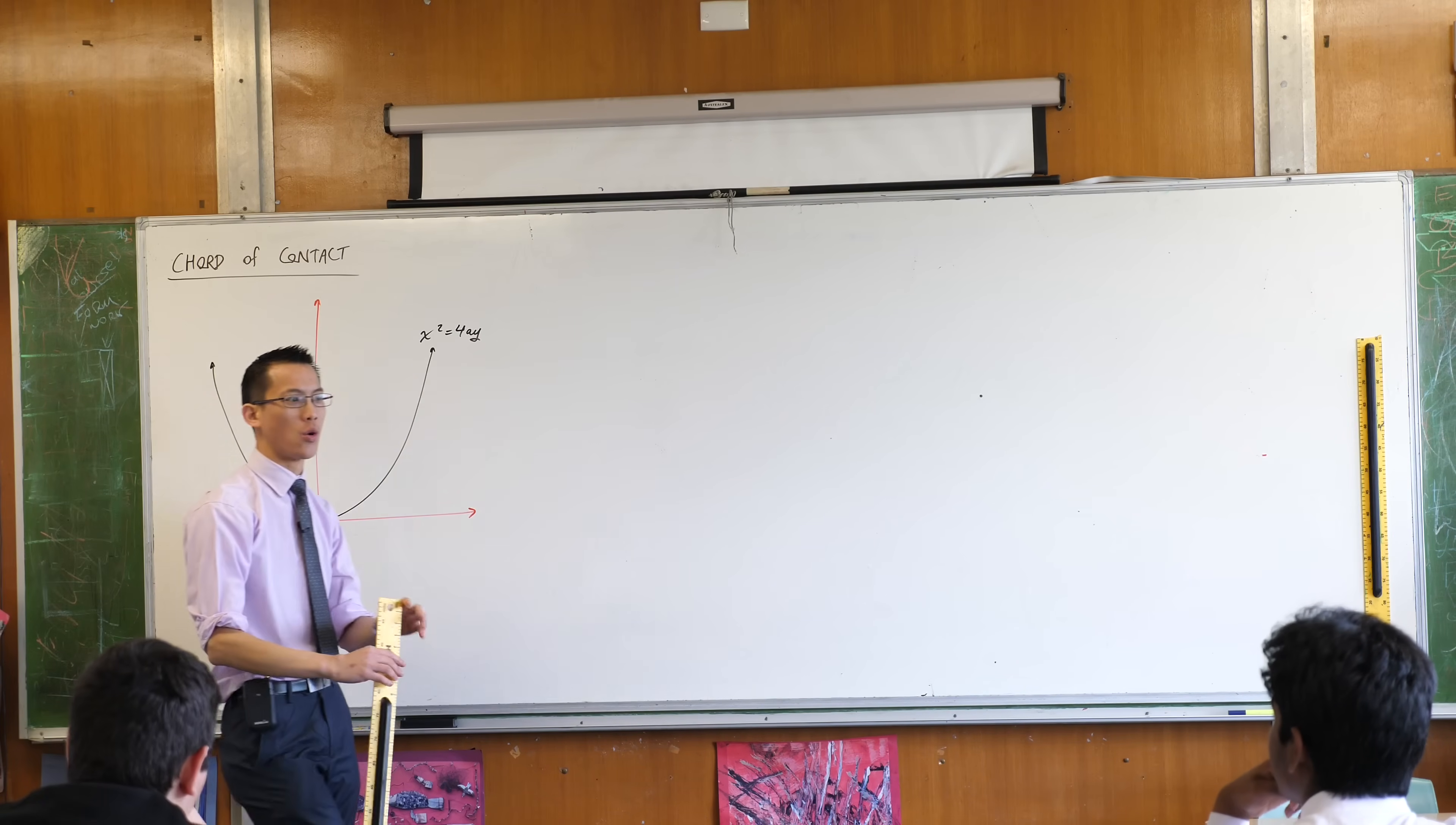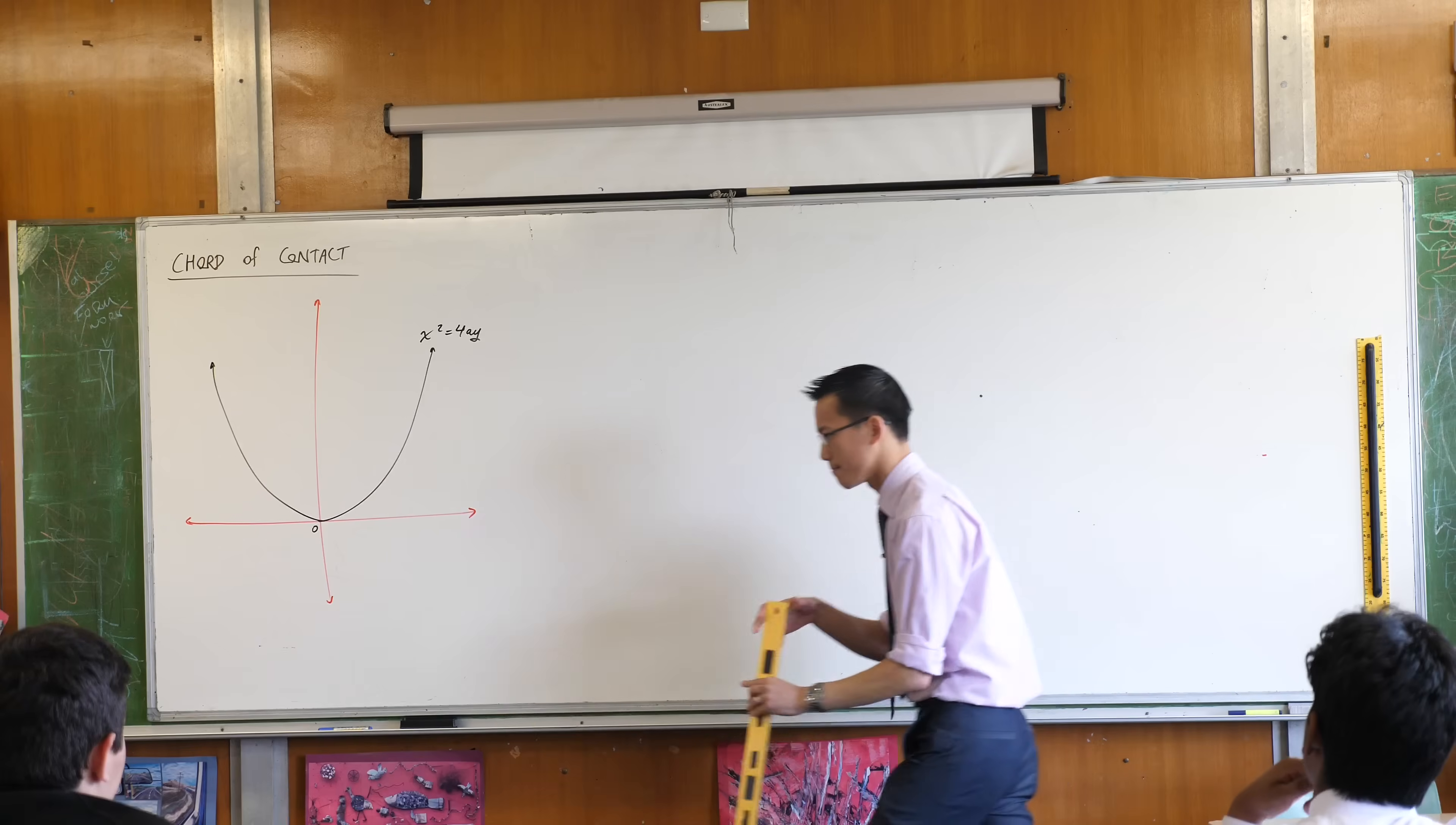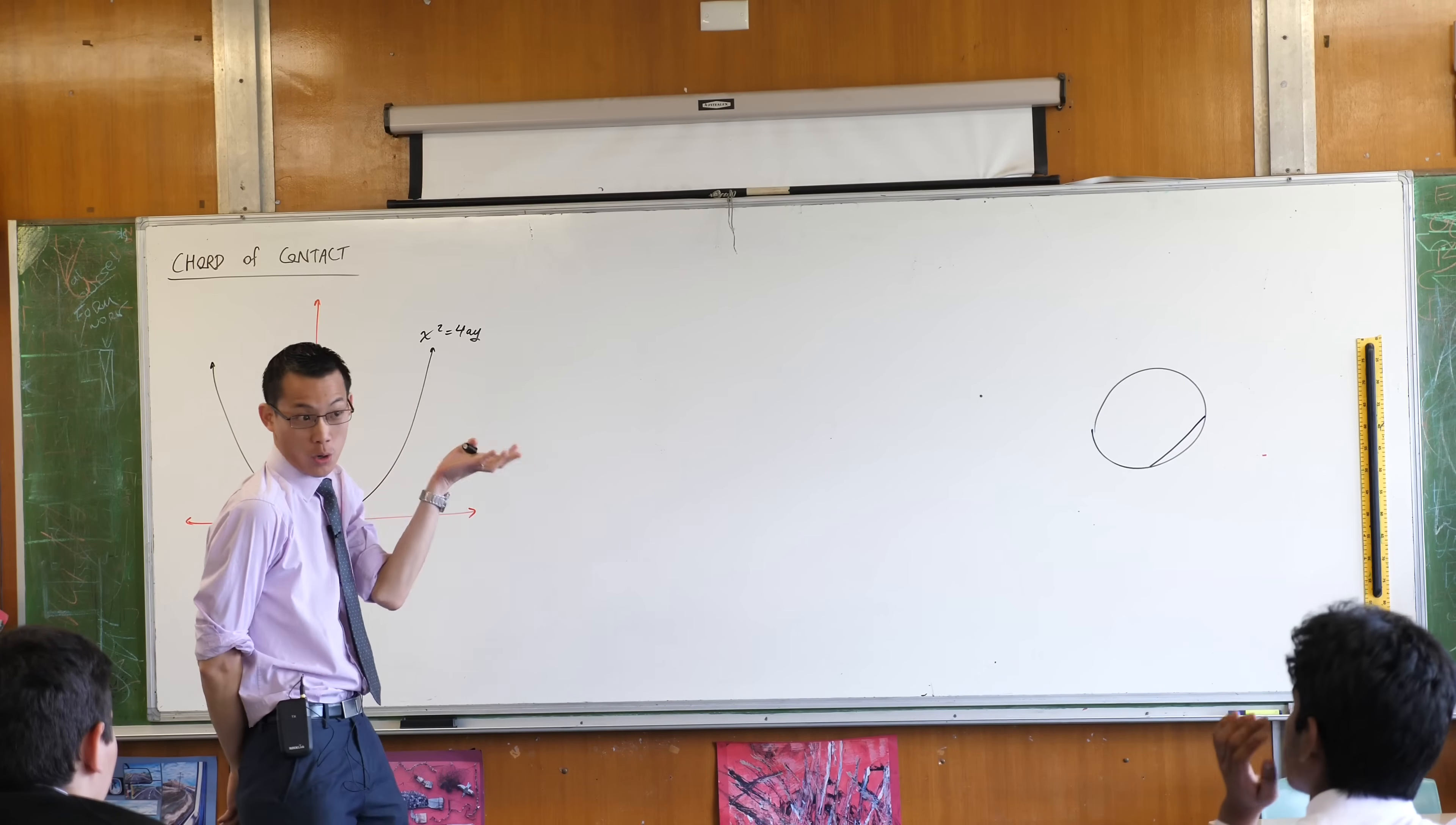But this is not just any chord, it's a chord of contact. What might that mean? Think back to circles. What would a chord of contact, like what are these extra words indicating? Any thoughts? What was a chord of contact for a circle? If that's a chord of contact, what makes it a chord of contact? Because right now that's just a chord.